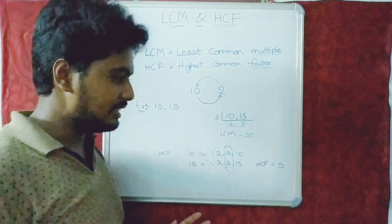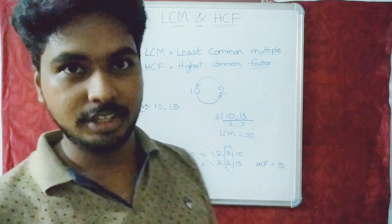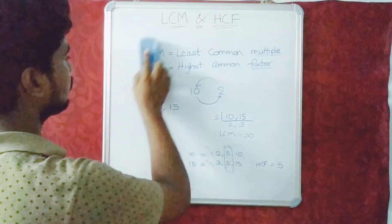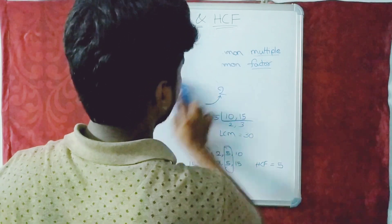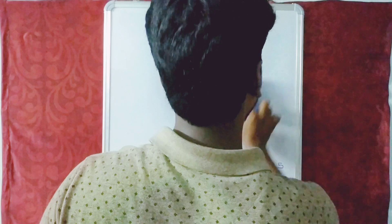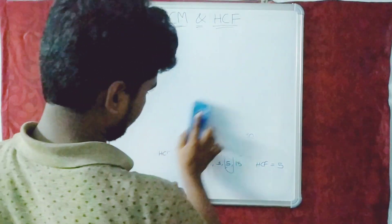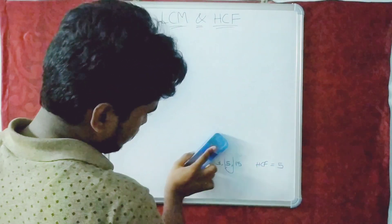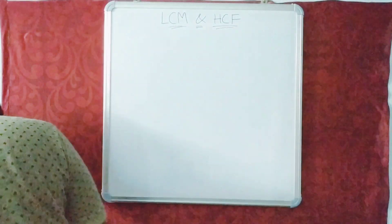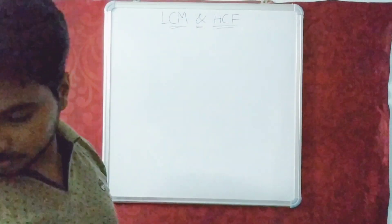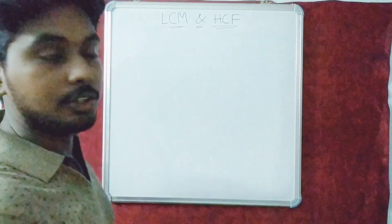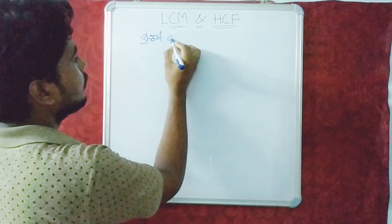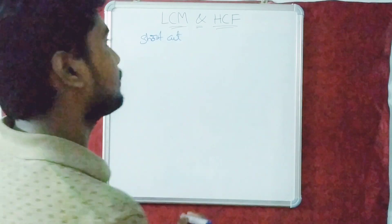But these are general ways. Let's see some tricks to find HCF and LCM simply. Now see the shortcut to find the HCF and LCM of two numbers.